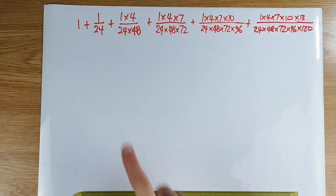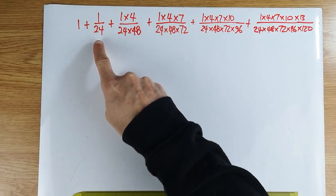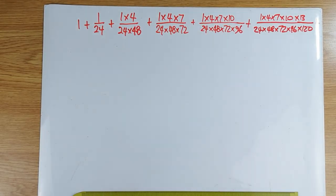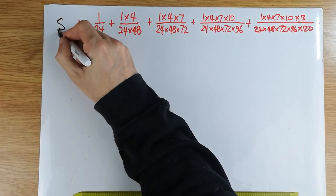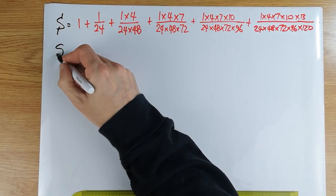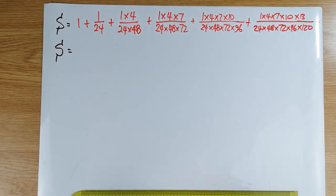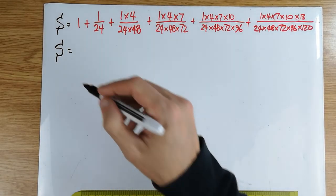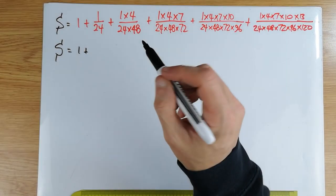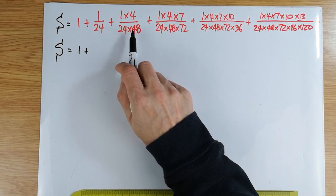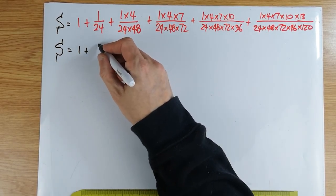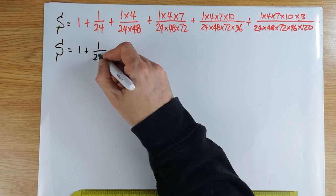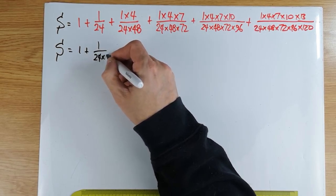So we need to make a few observations. I see hidden factorials at this particular denominator. I'm going to have to work smartly. Let's call this particular expression S.